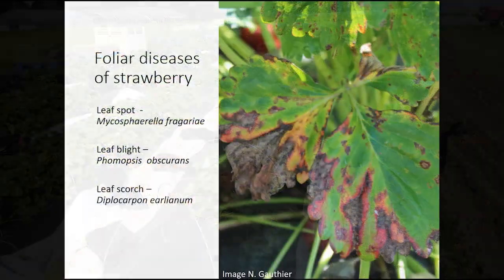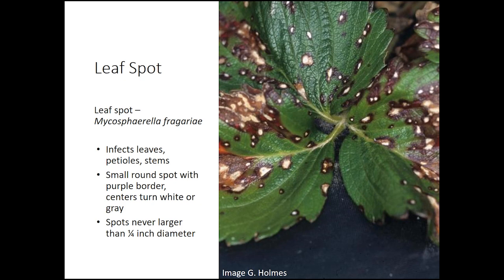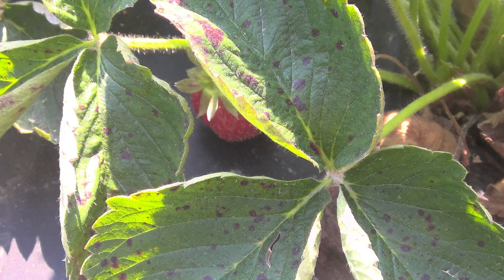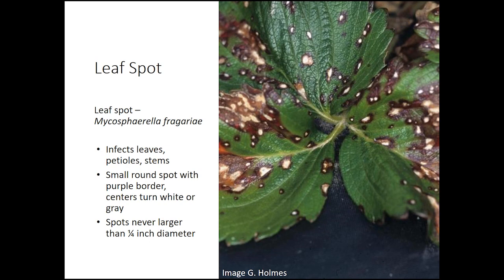The three leaf diseases can look similar, especially early in the disease stages, so let's look at each of them separately. Leaf spot — also called strawberry leaf spot or common leaf spot — can infect leaves, petioles, and stems. The spots are small with a purple border, and as the spots get older the centers turn white or gray. However, the spots never get larger than a quarter of an inch in diameter.